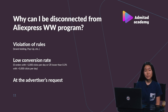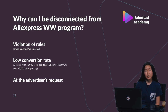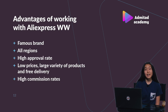First of all, do not violate program rules. Do not use forbidden traffic types such as brand bidding, pop-up, pop-under, etc. Do not let your conversion rate be too low. For example, you have zero orders but the amount of clicks is more than 1,000 per day, or your conversion rate is lower than 0.3% but the amount of clicks is more than 5,000 per day. We can also disconnect you from the program upon the advertiser's request. It happens very rarely, but when it does, it usually happens when AliExpress sees a lot of returned orders made through your affiliate links.